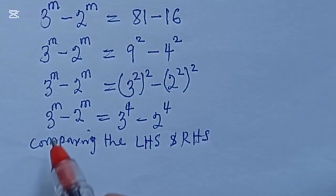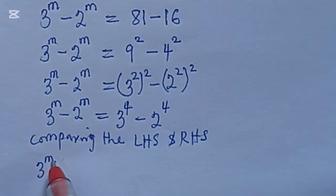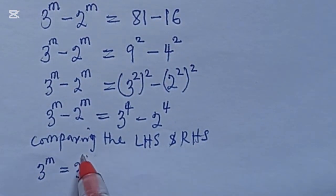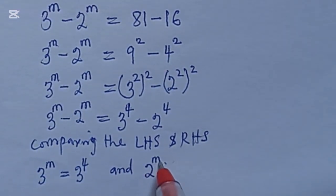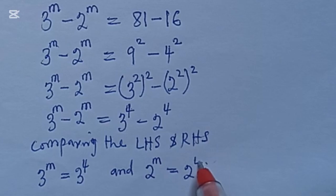you could see that 3 to the power of m is equal to 3 to the power of 4, and 2 to the power of m is equal to 2 to the power of 4.